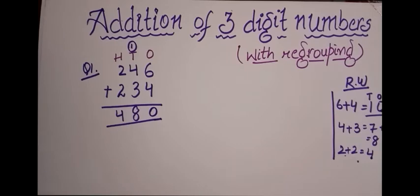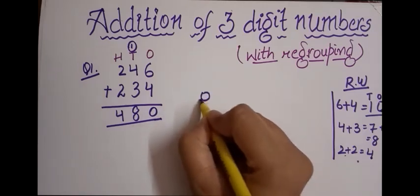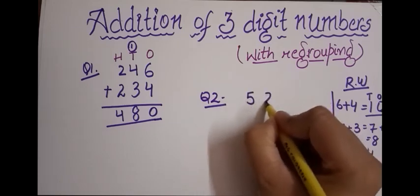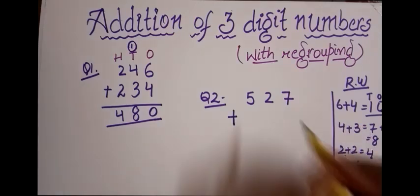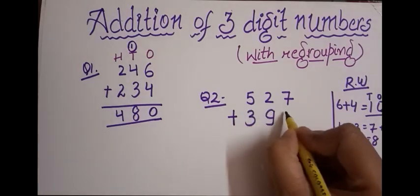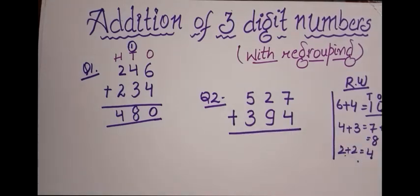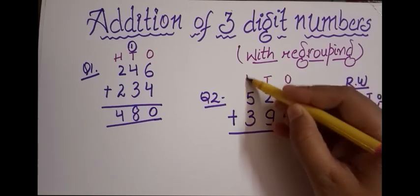The first question is done! Now let's do one more. For question number two, the example is 527. I'll put the plus symbol and add 394, then draw a line. Writing the correct places: seven is in the ones place, two is in the tens place, and we use H for the hundreds place.